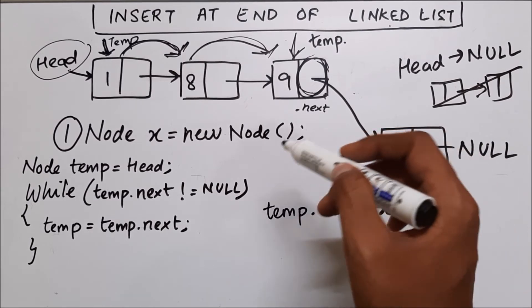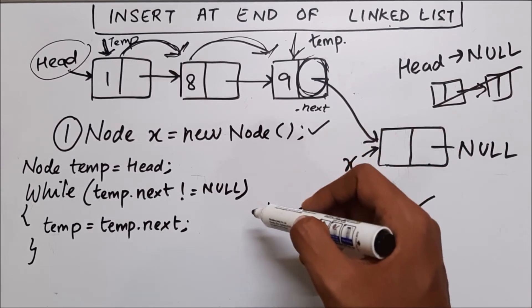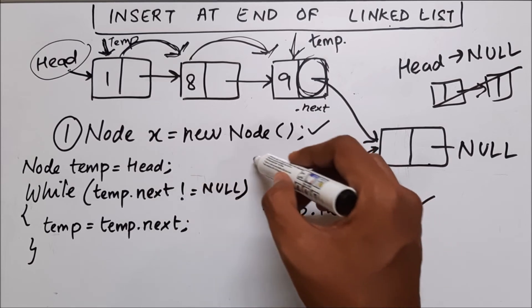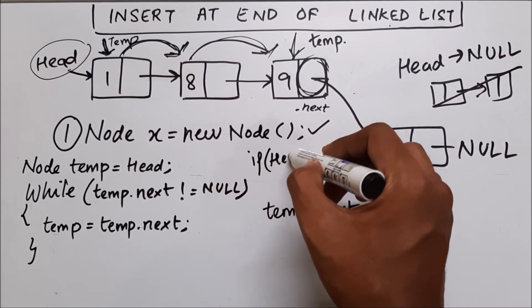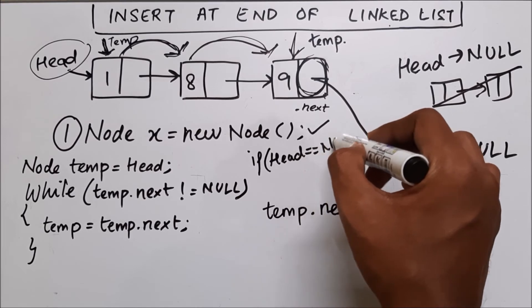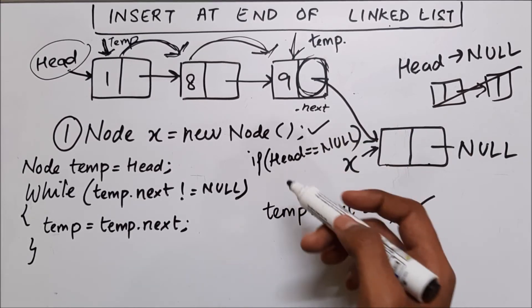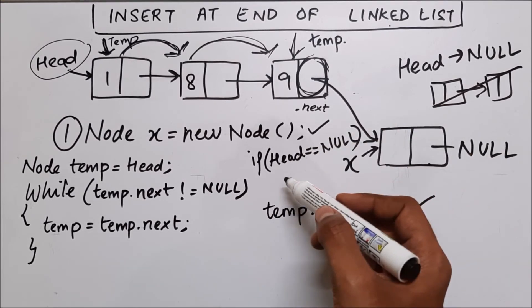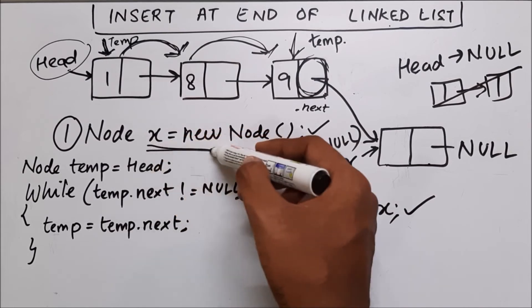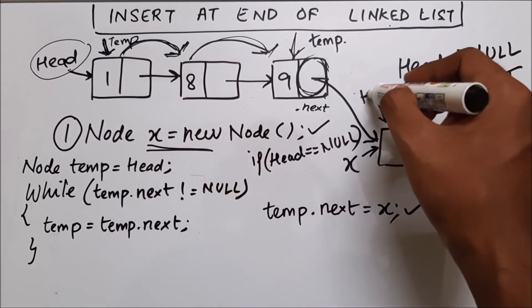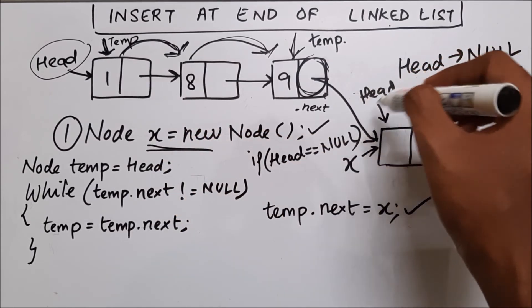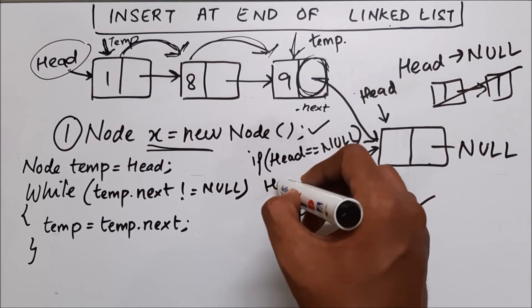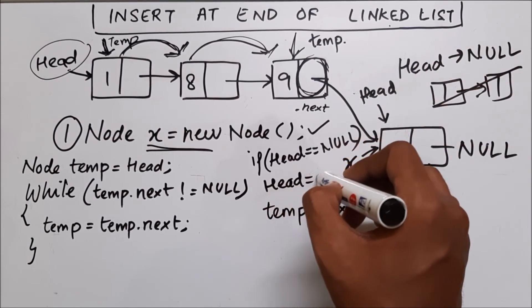In that case, you are going to create one node. We will check if head is null. If head is null, we are going to directly say that this node which we have created will be our new head. We will just say head equal to x. So this is the first condition which we have to check.